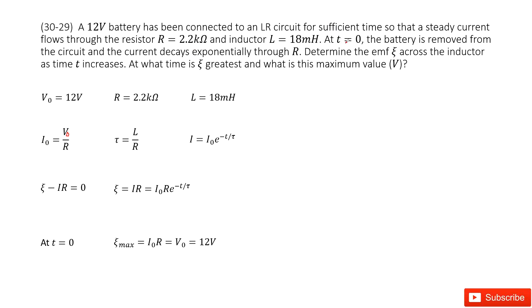Even at the time t equals zero, at this moment, the battery is removed. The current we can consider as I₀ equals V₀ divided by R.